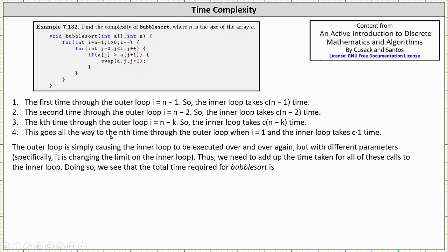This goes all the way to the nth time through the outer loop when i is equal to one and the inner loop takes c times one time. The outer loop is simply causing the inner loop to execute over and over again with different parameters. Specifically, it is changing the limit on the inner loop. Thus we need to add up the time taken for all these calls to the inner loop.